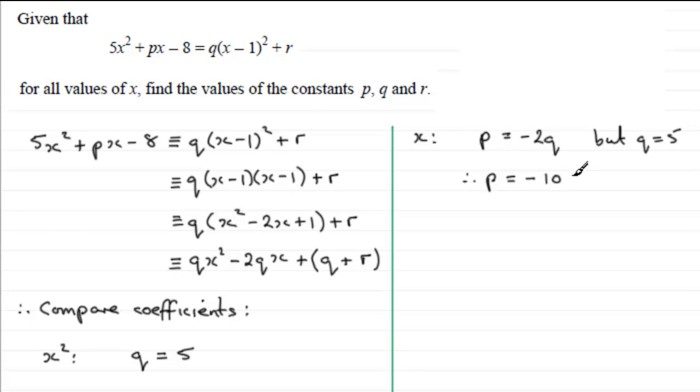So we've now got our value for p. So now just turn to the last term, q + r, which is a constant, and it compares to the constant here, -8. So if we just say we compare constants, then what we've got is q + r must be equal to -8.